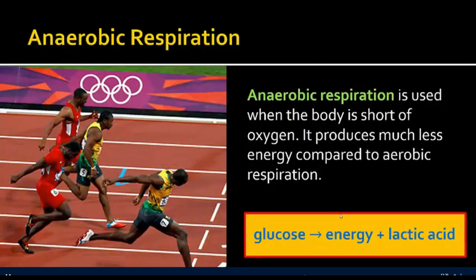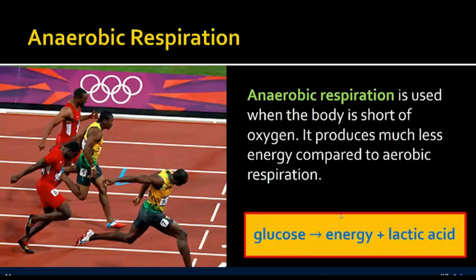The other form is anaerobic respiration. When we're short of oxygen, we undergo this process, but it produces much less energy and is not as efficient. For every molecule of glucose, anaerobic respiration only produces around two ATP molecules, as opposed to 36 or 38 ATP molecules in aerobic respiration. It also produces lactic acid, which is probably why you feel sore after vigorous exercise — that lactic acid indirectly affects your muscles and makes them feel sore.